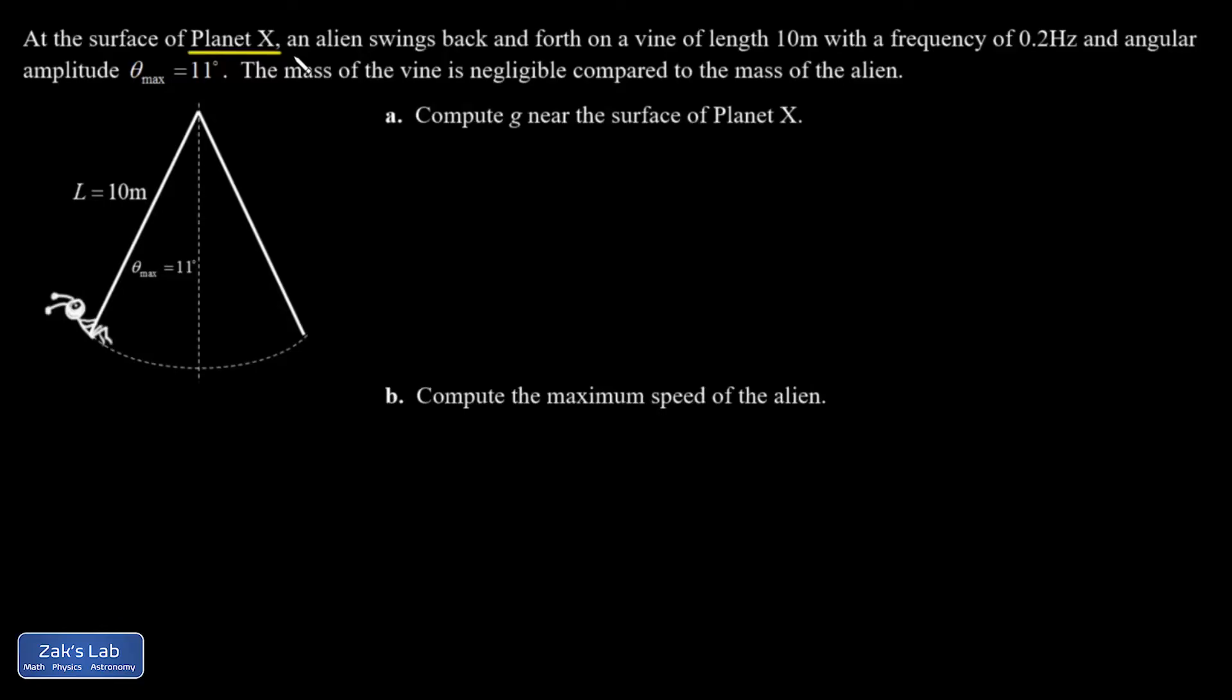In this problem, we travel to planet X and watch an alien swing back and forth on a vine. The reason we had to go to another planet is because G is going to be different here than it is on Earth. So I have this 10 meter vine with negligible mass swinging back and forth with a frequency of 0.2 hertz with this alien hanging off the end. And I'm given the angular amplitude for the swinging, in other words, the maximum angle.